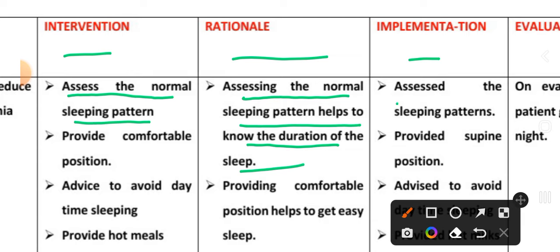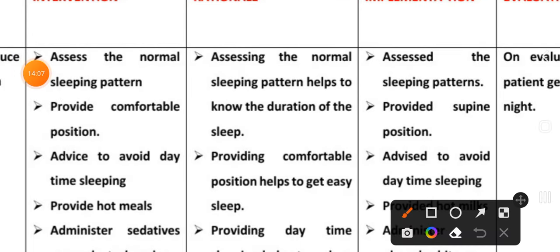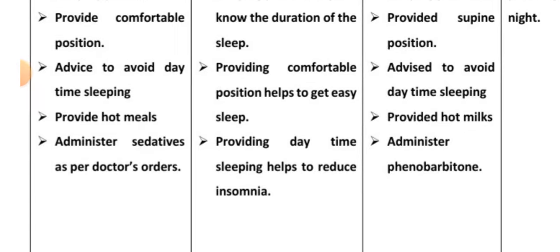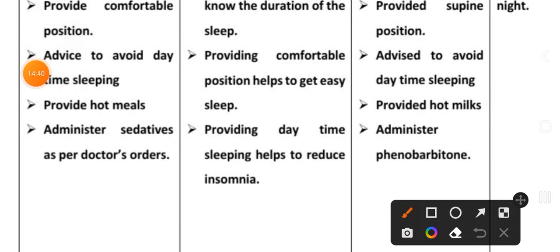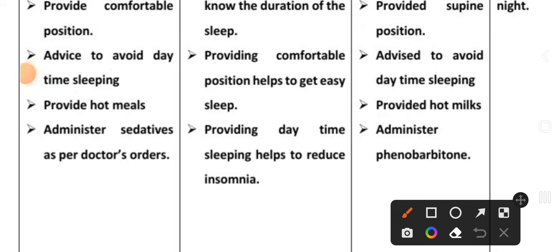Second intervention: provide a comfortable position to the patient. Rationale: a comfortable position helps to get easy sleep. Implementation: provided supine position to the patient. Third intervention: advise to avoid daytime sleep, as this helps to reduce insomnia.